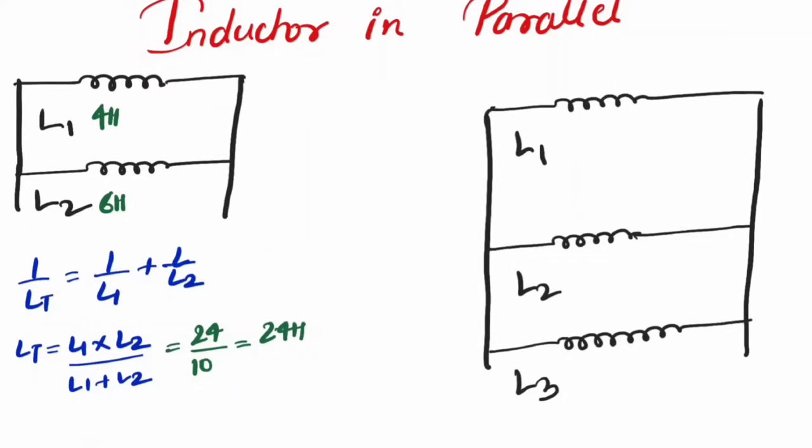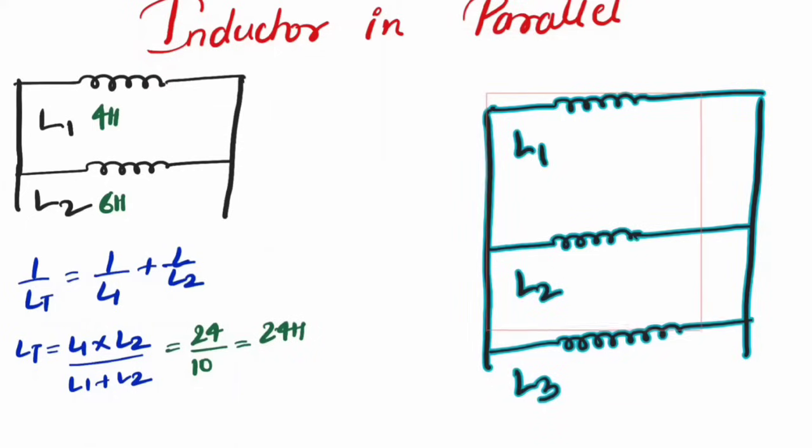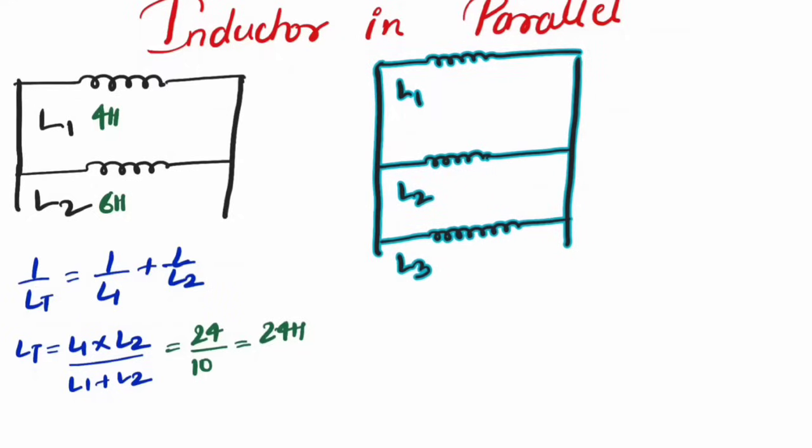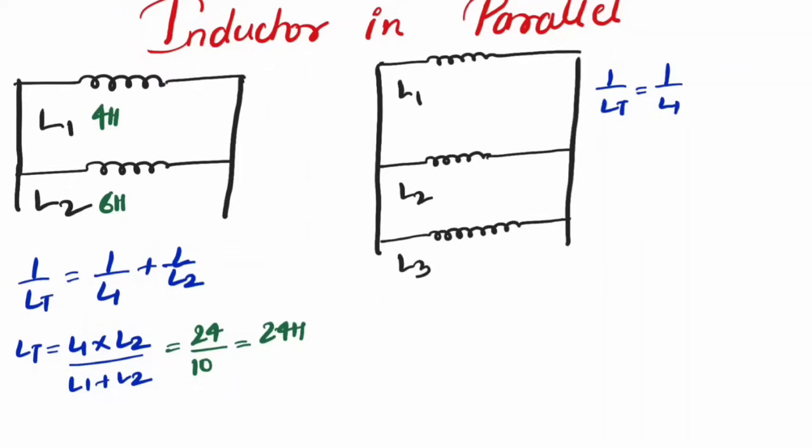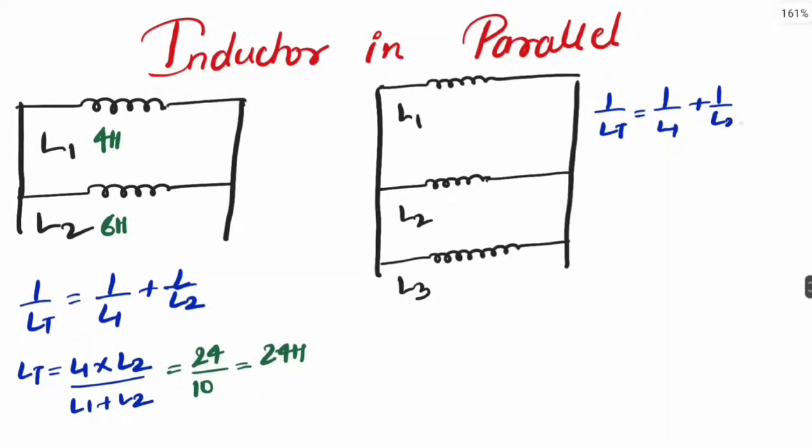Let's assume there are three inductance. For three inductance, my 1 upon Lt is exactly 1 upon L1 plus 1 upon L2 plus 1 upon L3. Now let's assume some inductance. Let's take this as 5, 10, and 30. 1 upon Lt will be 1 upon 5 plus 1 upon 10 plus 1 upon 30.